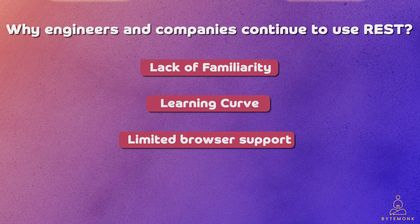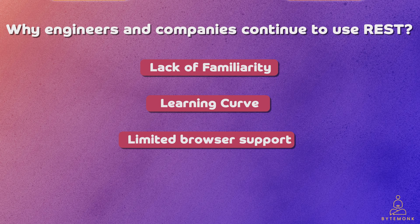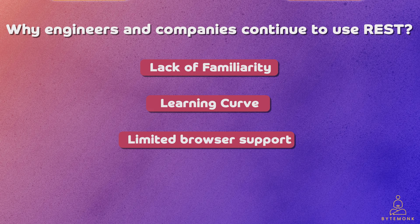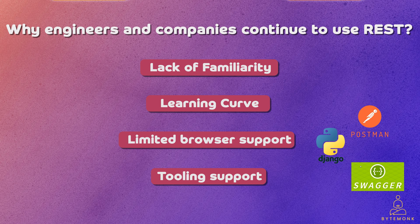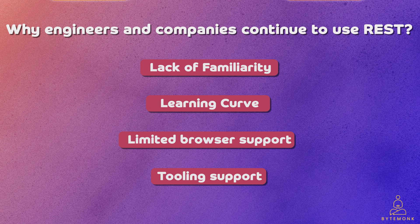One of the other main reasons is that gRPC is designed primarily for communication between microservices and does not natively support web browsers. REST APIs, on the other hand, can be easily consumed by web browsers, mobile apps, and other clients, and this flexibility makes REST a popular choice. While there are workarounds in gRPC, it can make it more difficult to use gRPC for front-end development. Additionally, while tools and libraries are available for gRPC, the ecosystem is not as mature as REST APIs, making it harder to find resources and support.